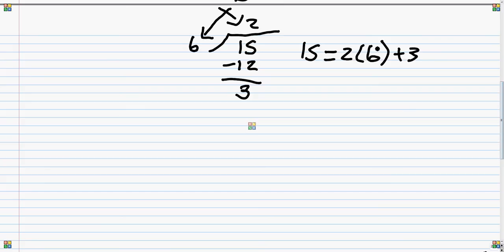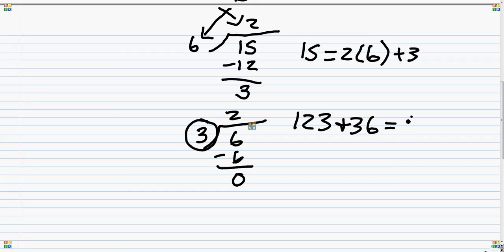And then 6 becomes the dividend, and the remainder becomes the divisor. So 3 goes into 6 twice with no remainders. So that means the greatest common factor of 123 and 36 is 3.